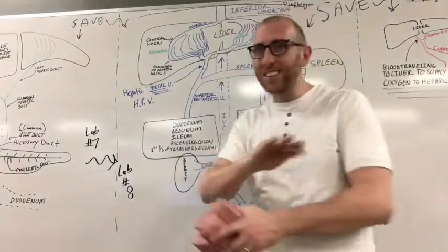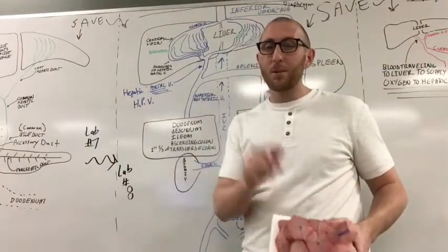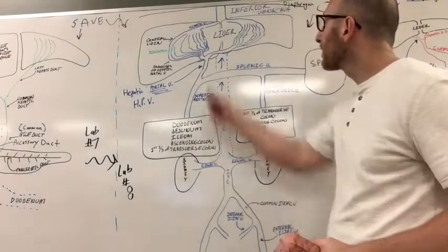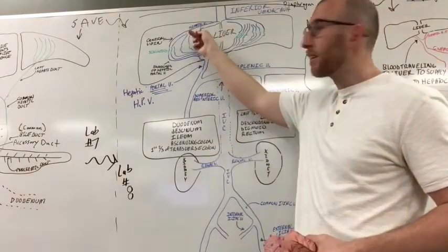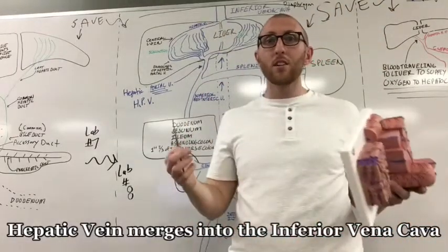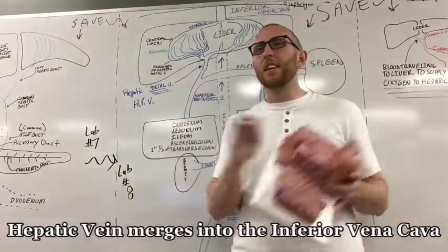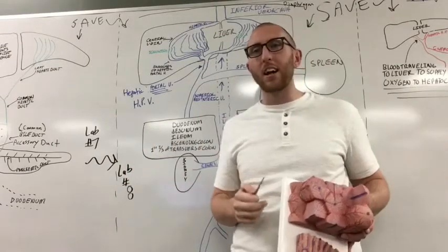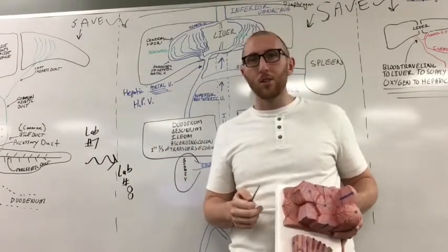One word changes everything, especially with the blood vessels. After the hepatic vein comes out, it goes up to the inferior vena cava, and then it goes into the heart. Because it's been filtered. It's good to go. It's good blood after that. And it's ready to go back to the heart.